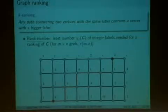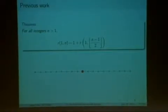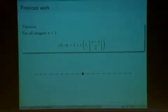This is called a graph ranking. Now an obvious question that we can ask is, what is the least number of integer labels we need in order for this ranking condition to be satisfied? So it turns out that even for grid graphs, this problem is actually considerably hard. So previously, the rank number has been completely characterized for 1 by n, 2 by n, and 3 by n grid graphs.